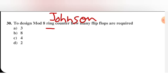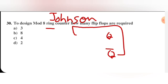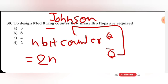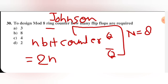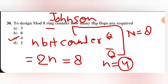To design a mod 8 Johnson counter, how many flip-flops are required? In a Johnson counter, Q-bar is fed back as feedback instead of Q. For an n-bit Johnson counter, it can count 2n clock pulses. For mod 8, capital N equals 8, so 2n equals 8, giving n equals 4. Therefore 4 flip-flops are required. For mod 16 Johnson counter, 16 divided by 2 equals 8 flip-flops. The rule is: divide the state count by 2 to get the number of flip-flops.